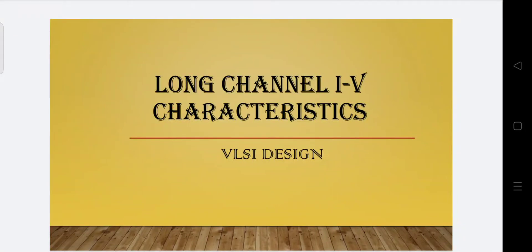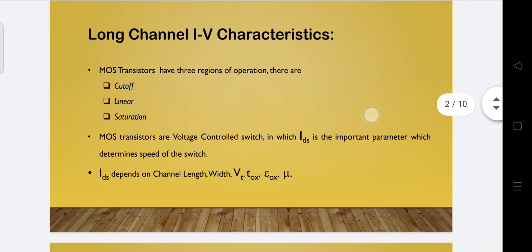Hello students. In this video we are going to see about long channel IV characteristics derivation. In this long channel IV characteristics we have derived the relationship between output current IDS, drain source current, and input voltage VGS, which is gate source voltage, for three regions of operation that a MOSFET transistor will act in when we apply external voltage at the gate terminal.